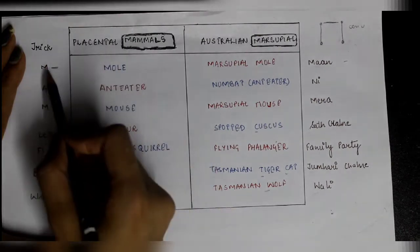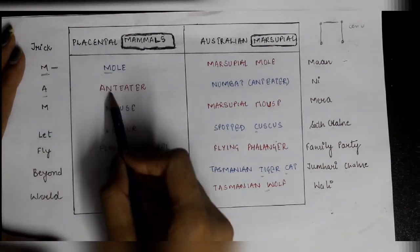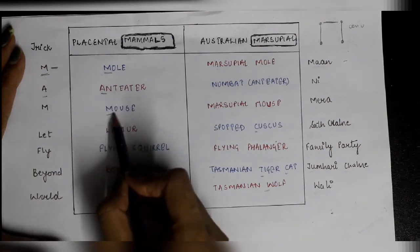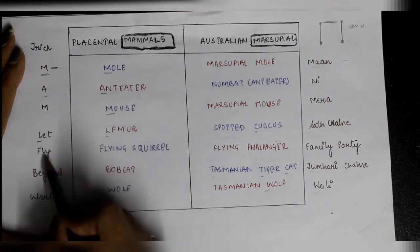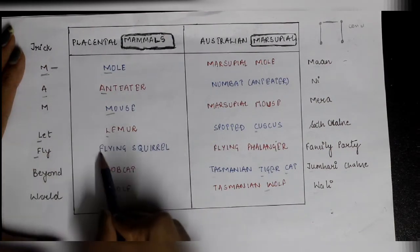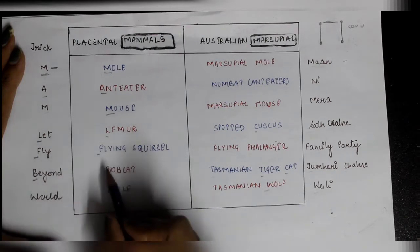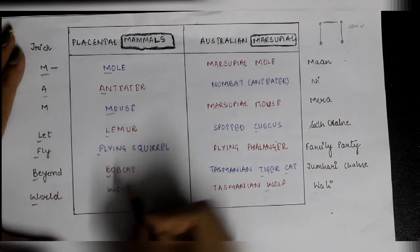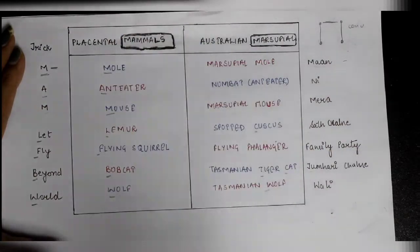In this mnemonic: M is representing mole, A is representing anteater, M is representing mouse, L is representing lemur, FLY is representing flying squirrel, BEYOND is representing bobcat, and WORLD is representing wolf. A very easy mnemonic and a very easy way to remember this.